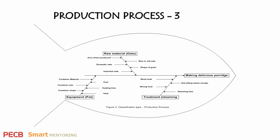The layer you're probably most familiar with has processes, raw materials, storage, equipment, and steaming moved away from the central spine, with the associated causes added to each of the main categories. You'll see under raw materials — the oats — area where produced, domestic oats, imported oats, shape of grain, and new or old oats.